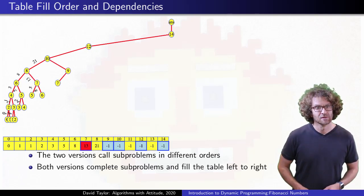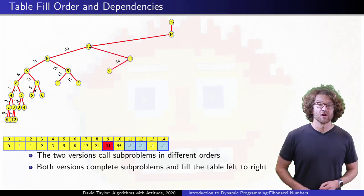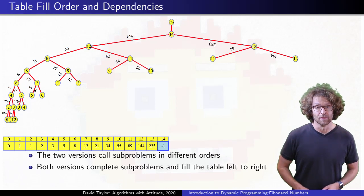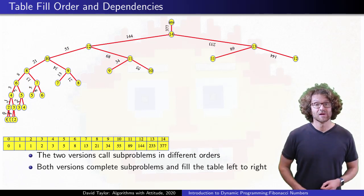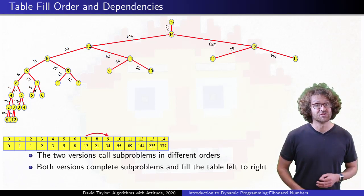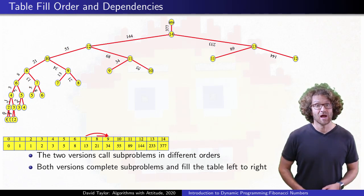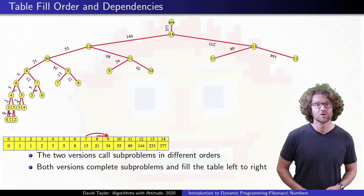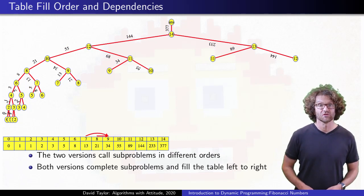Why is that? Well, let's focus on one arbitrary value from that table, somewhere in the middle, let's say the ninth one. The ninth Fibonacci number depends on the seventh and eighth Fibonacci numbers, so the program needs to finish computing them before it can compute the ninth one, no matter what order the recursive calls are made.